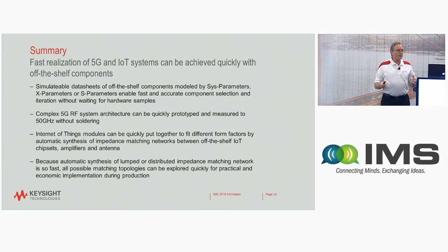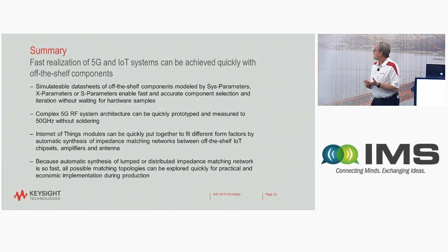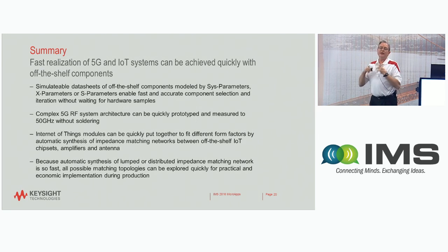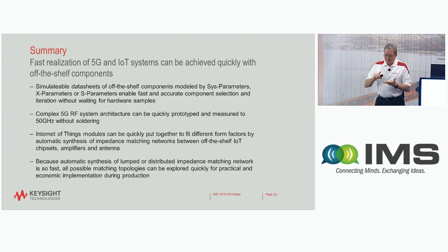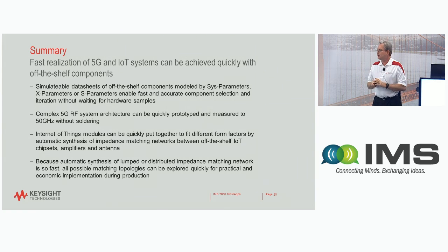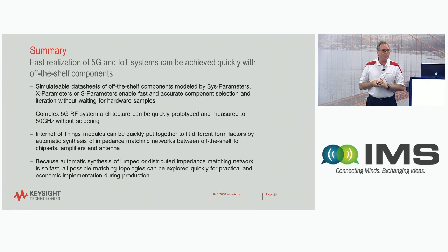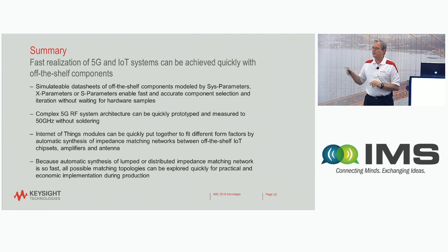In summary, if we can leverage the parts that exist and use rapid prototyping systems like this with S-parameters, X-parameters, and now Keysight sysparameters, you can get faster and more accurate answers. And if you can do automated matching of these networks, it can save a lot of time and you can get to market quicker. If you're interested in more information, please come see us at the booth, and we have a workshop tomorrow at 3 o'clock to talk more about both of these applications.